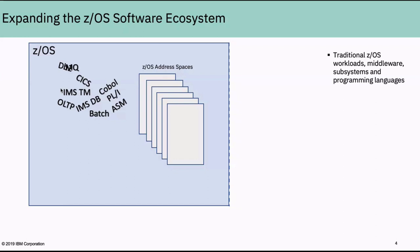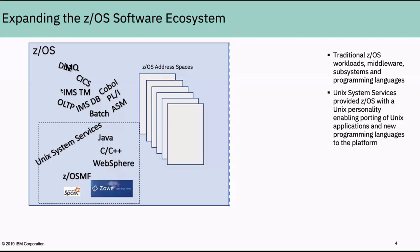Starting by taking a step back and looking at the motivation for this function. ZOS has been around for a very long time supporting a lot of workloads, middleware, subsystems, and languages like CICS, IMS, batch workloads, and DB2. Looking at the history of ZOS, probably about 25 years ago, we introduced this function called Unix System Services.